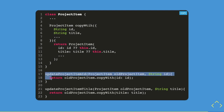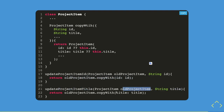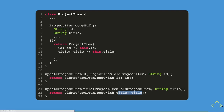To combine copy with and state update functions: you have a function outside the class — for example, update project item ID — that takes an old project item and a new ID, then uses copy with to return the old project item with the updated ID. Similarly, to update the title you pass in the title and old project item and return it using copy with, which just overrides the current title.